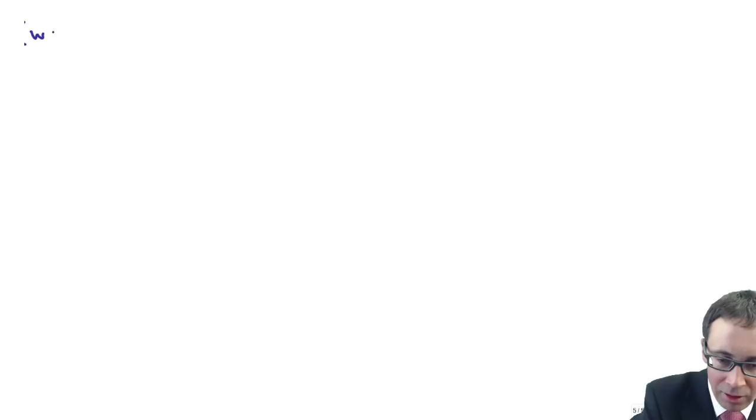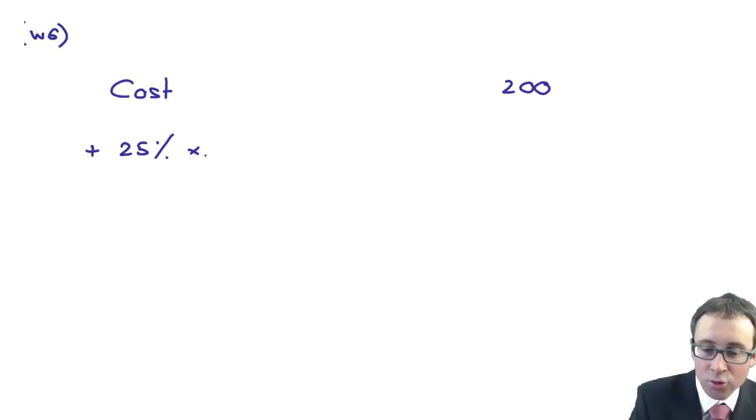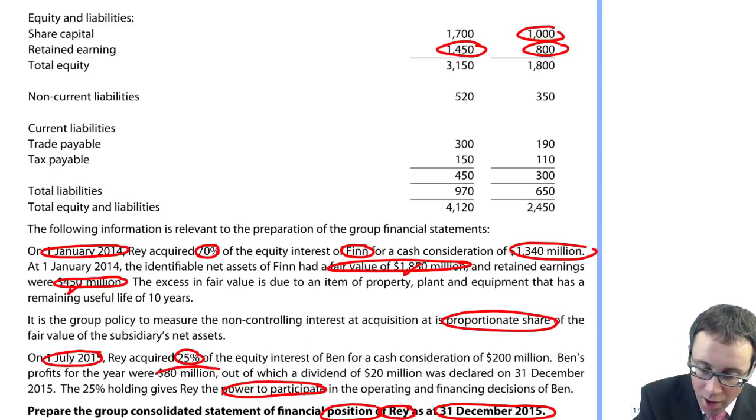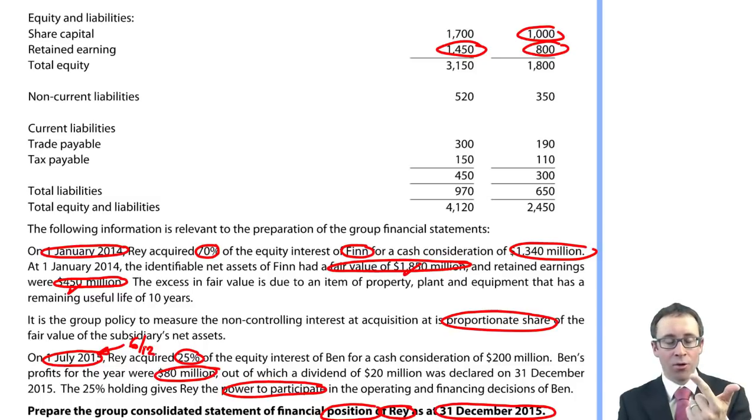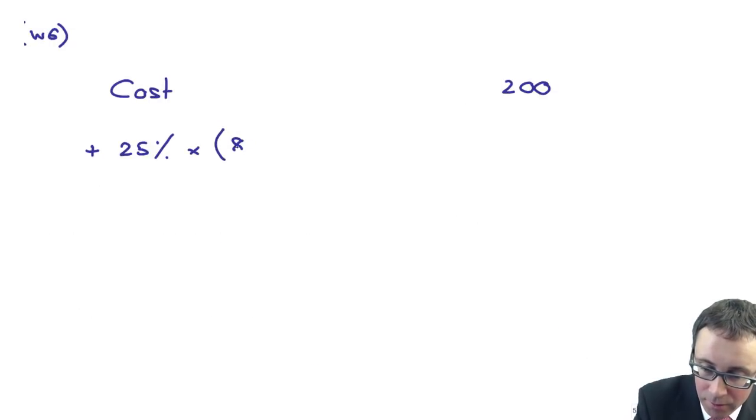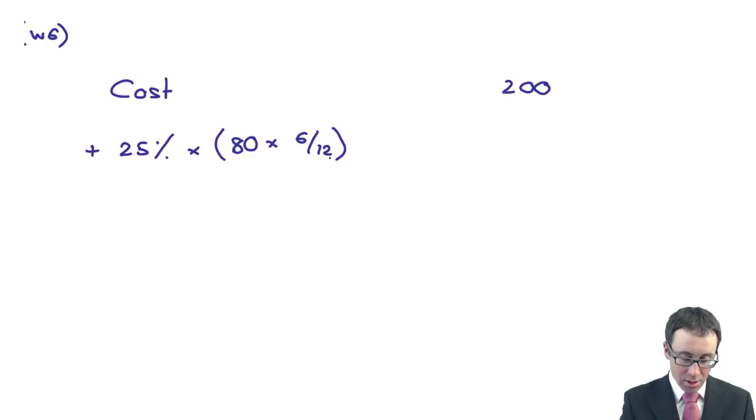Before we have a look at working six, the associate. So we go through and look at the cost. The cost of the associate is 200. We equity account using our 25% share. The profits for the year were 80, but be careful. First of July. So we've only had the associate for six months. So we need 25% of 80 multiplied by six twelfths. So 80 times by six divided by 12 is 40. And 25% of 40 is 10.